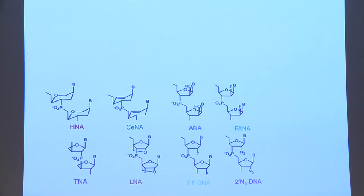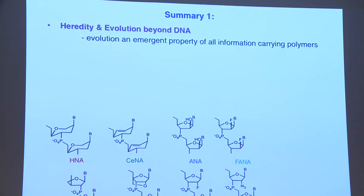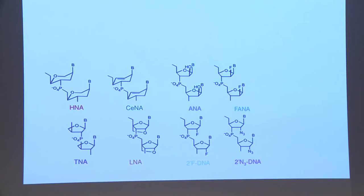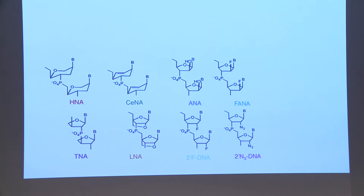To summarize this part of the talk: what this shows is that, at least in this limited way, both heredity and evolution — two fundamental properties of life — are not restricted to DNA and RNA, but can be implemented in quite a range of different polymers. Presumably evolution is an emergent property of all information-carrying polymers that can be replicated. And there are clear opportunities now for re-invading biology with these orthogonal backbones and trying to build orthogonal genetic systems within the cell.